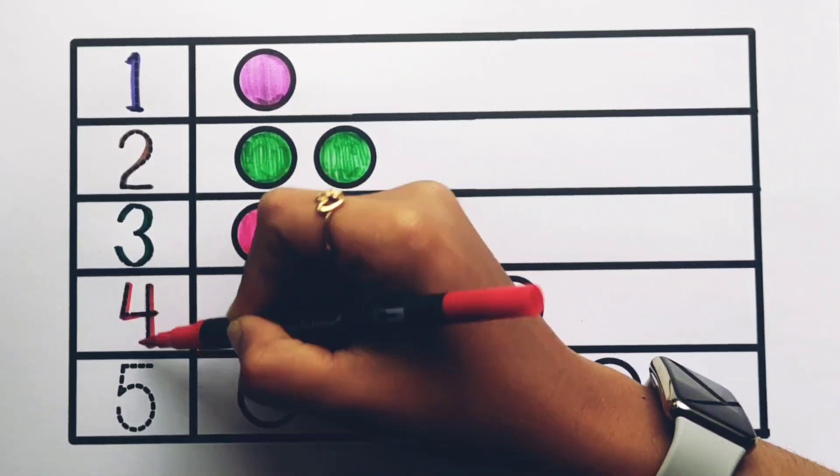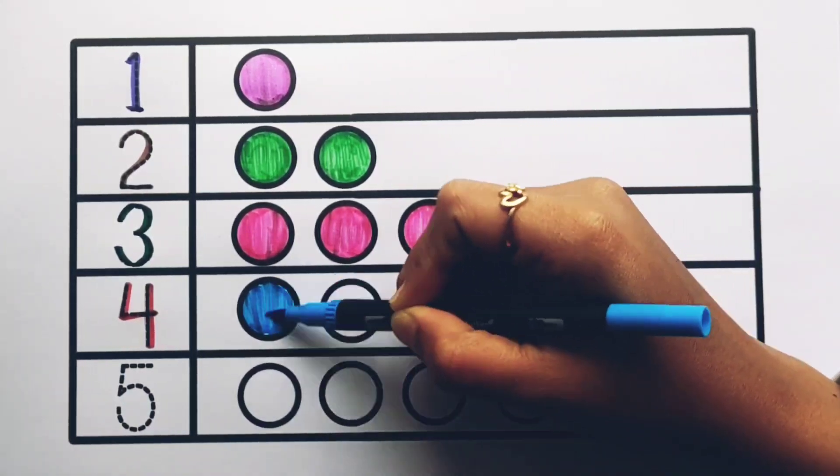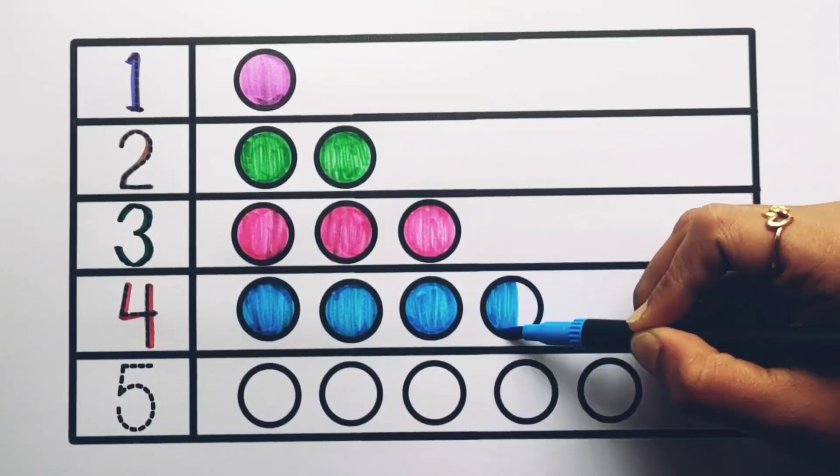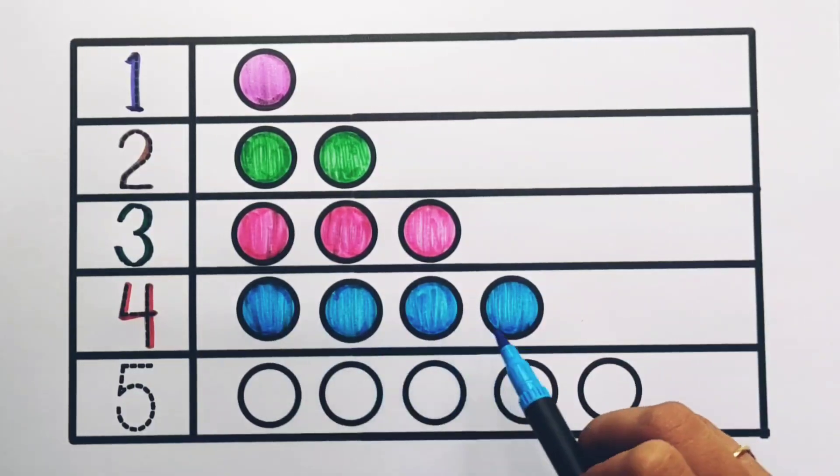Number 4. Blue color, 1, 2, 3, 4, 4 circles.